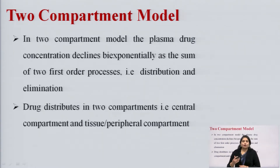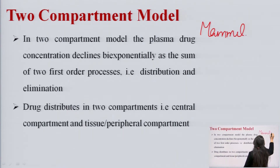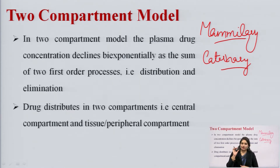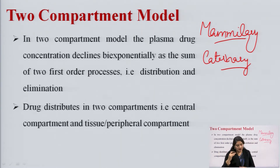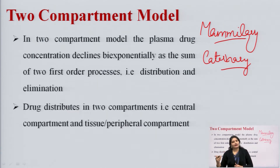Depending upon whether compartments are arranged in parallel or in series, we have two different types of models. The first is the mammillary model, which is the most common compartmental model and consists of various peripheral compartments arranged in parallel, similar to satellites connected to a planet — compartments are connected to a central compartment.